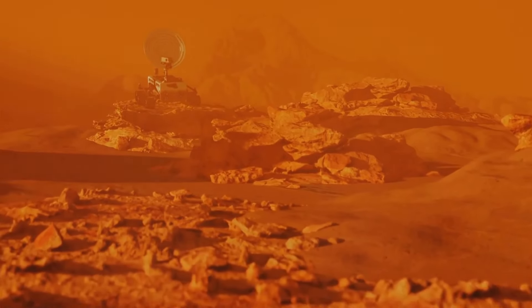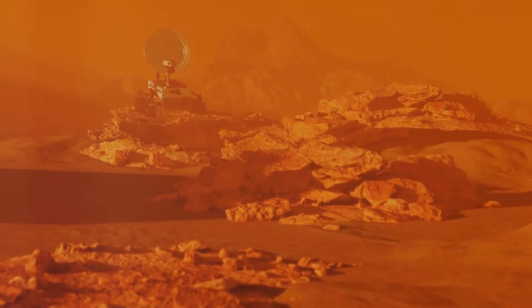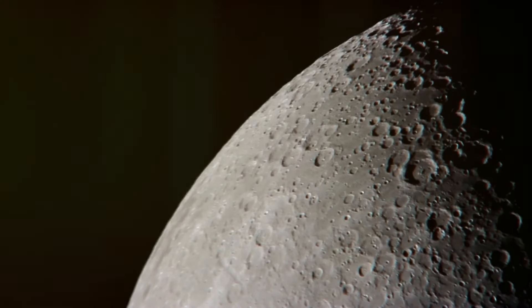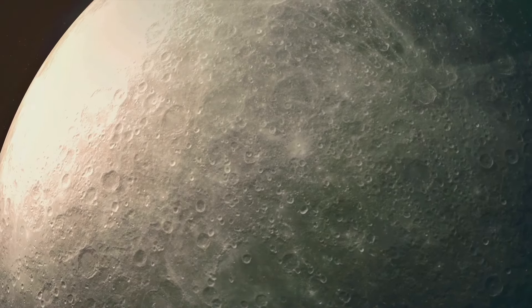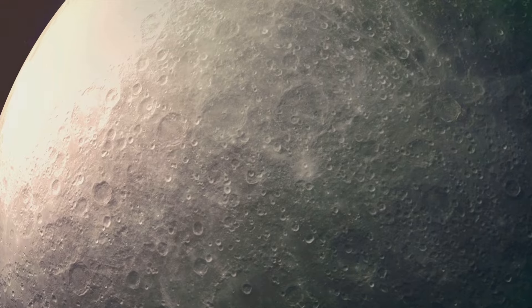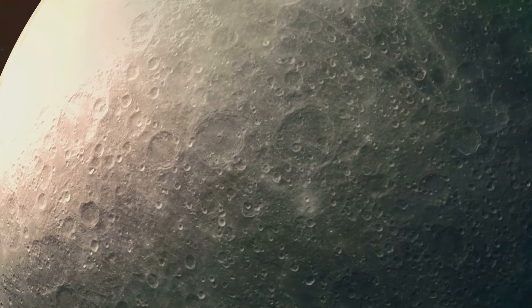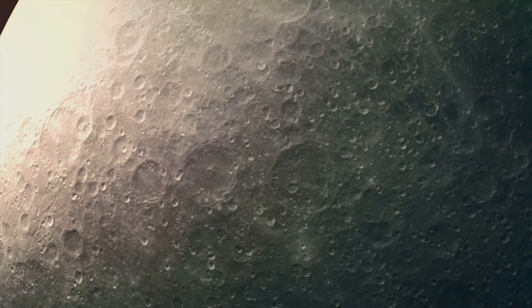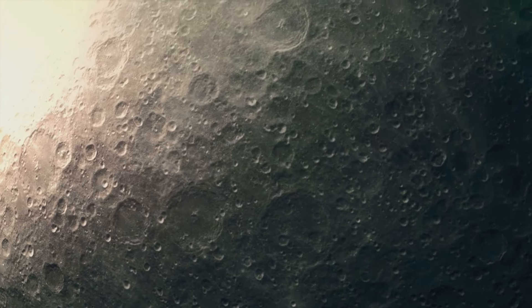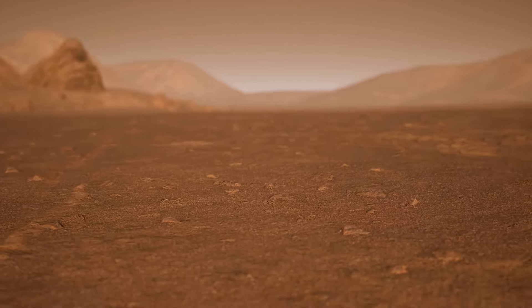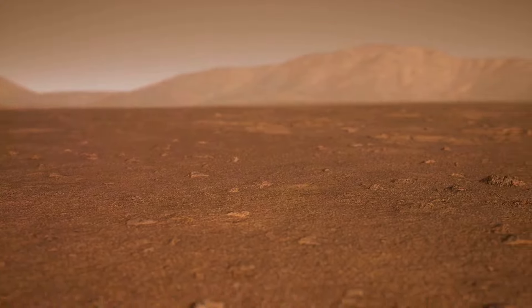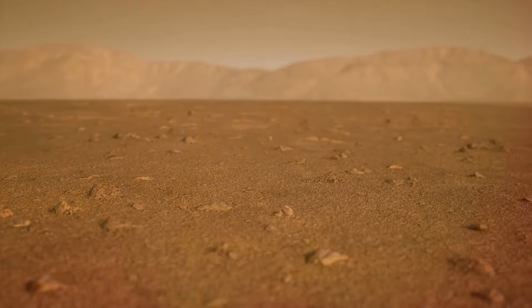Mercury, the smallest and closest planet to the sun, is a world of extremes. With a scorching hot surface temperature reaching over 400 degrees Celsius during the day and plummeting to frigid minus 180 degrees Celsius at night, Mercury experiences the most significant temperature swings of any planet in our solar system. Its thin atmosphere offers little protection from the sun's intense radiation or meteoroid impacts, leaving its surface heavily cratered and barren.